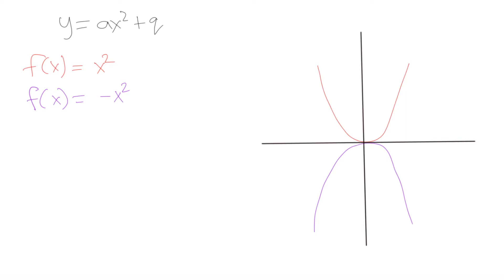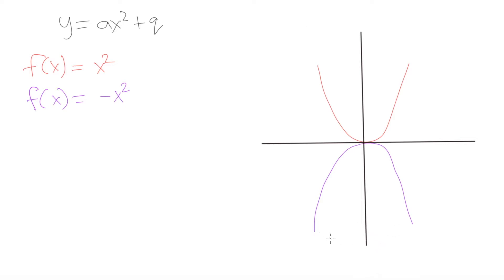These parabolas are either going to be opening up or opening down. This red curve is an example of a parabola that opens upwards — the opening is facing the top. Whereas this parabola in purple is going to open down, meaning the open part of the parabola is facing downwards.